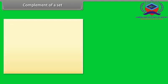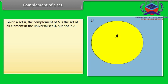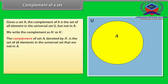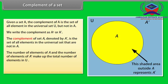Complement of a set. Given a set A, the complement of A is the set of all elements in the universal set U but not in A. We write the complement as A dash. The complement of set A, denoted by A dash, is the set of all elements in the universal set that are not in A. The shaded area outside A represents A dash. The number of elements of A and A dash make up the total number of elements in U. That means N(A) plus N(complement of A) is equal to N(U).